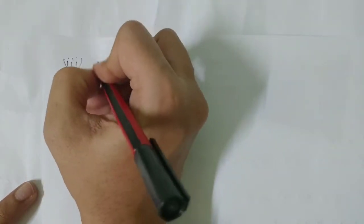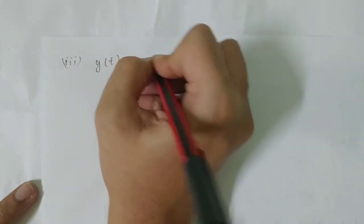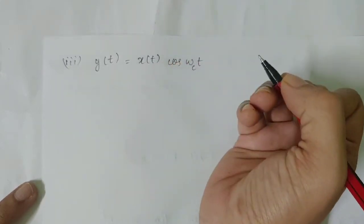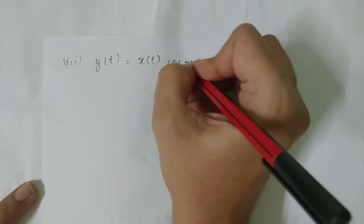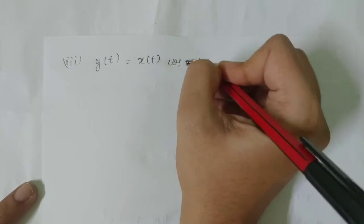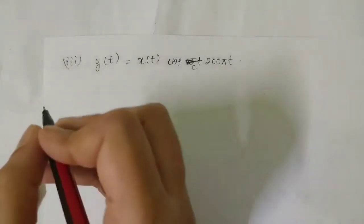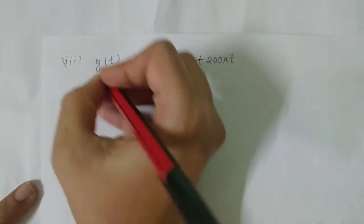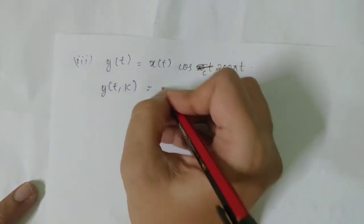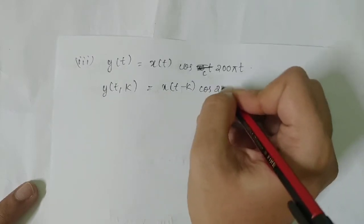The third question: y(t) = x(t)·cos(200πt). So y(t,k) — delaying the input — equals x(t−k)·cos(200πt). This is the first equation.